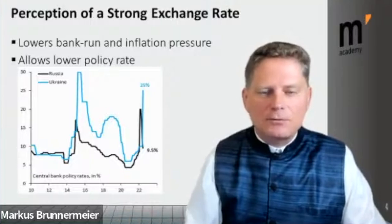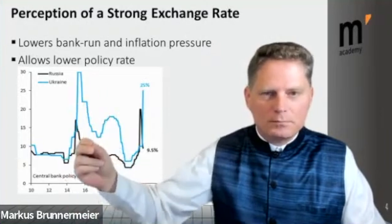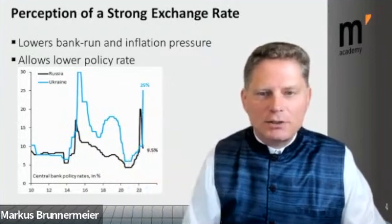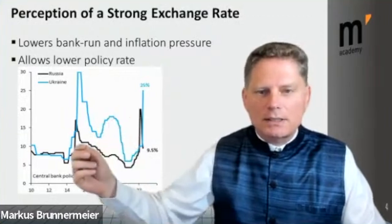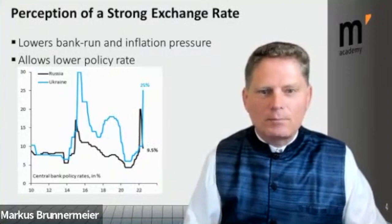If you look at the policy rate, the interest rate the central bank sets: in 2014 it shot through the roof, and recently it went up dramatically again to stabilize the exchange rate, but then came down. In contrast, Ukraine's policy rate — the blue line — went up and did not come down. The policy rate is very interesting to look at alongside the exchange rate.